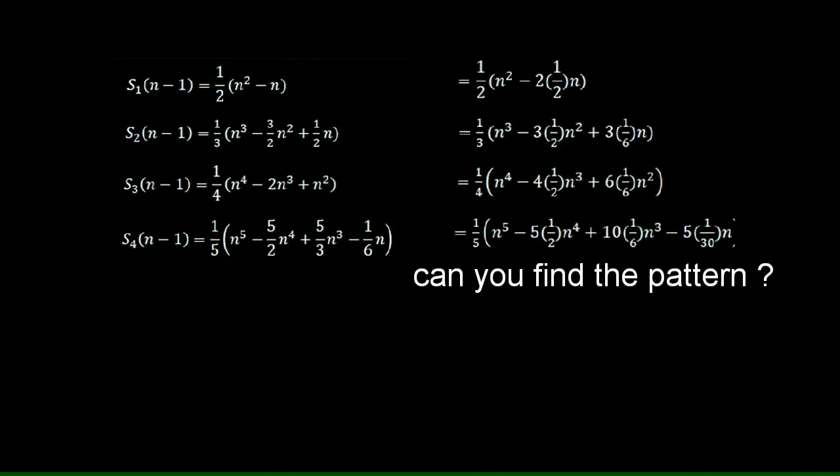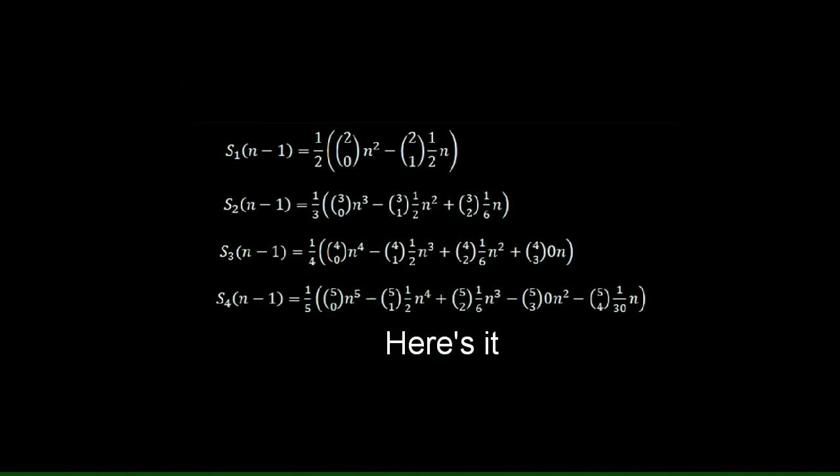A bit more modification, and we get this. But we are still not sure about what to do with these numbers. To specify them, they are called Bernoulli's numbers named after mathematician Jacob Bernoulli. So, the general pattern looks like this.